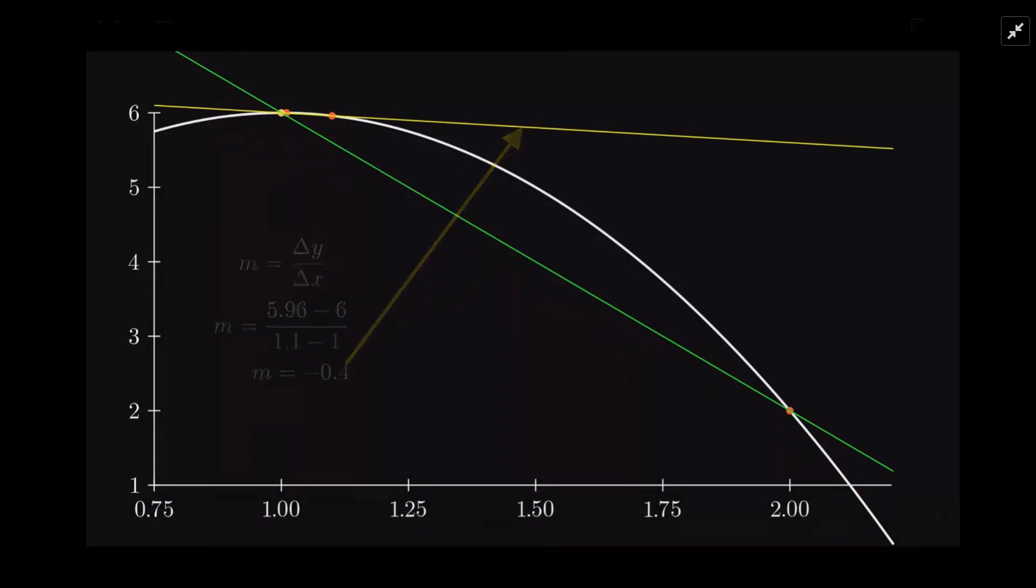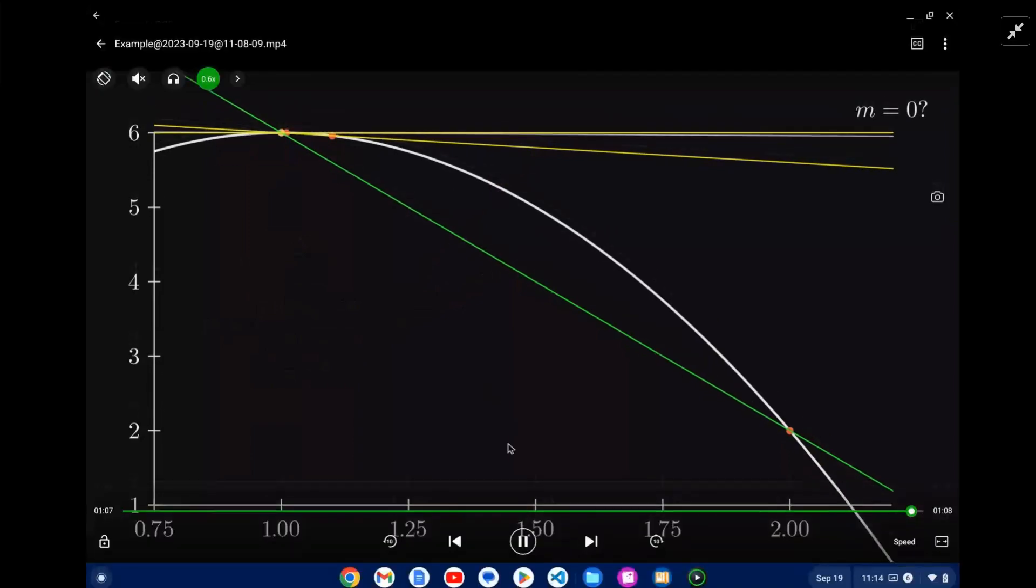Notice that the slope is getting smaller - well, not smaller, but closer to zero because it's starting out negative. The calculation is approaching zero. Let's actually draw the tangent here now - just barely above that last secant. It's reasonable to estimate that it's going to be zero.